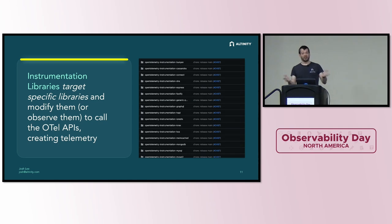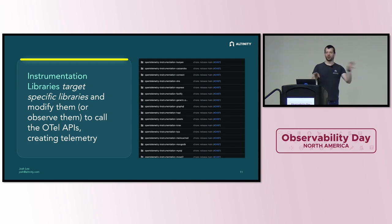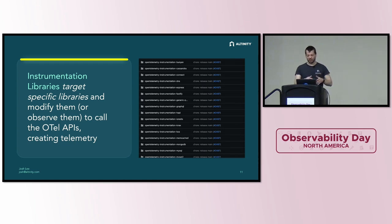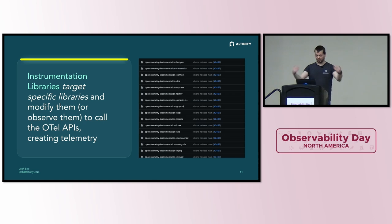Instrumentation libraries give us visibility into the libraries we're using — things like database calls and HTTP request handlers that we didn't write ourselves. Having instrumentation libraries that understand what those libraries are doing and can translate that into OpenTelemetry API calls is starting to get us to automation. But this is still inside our code — we still need to add dependencies.